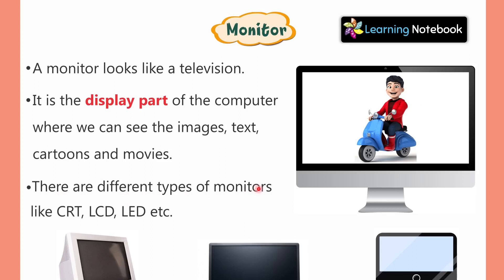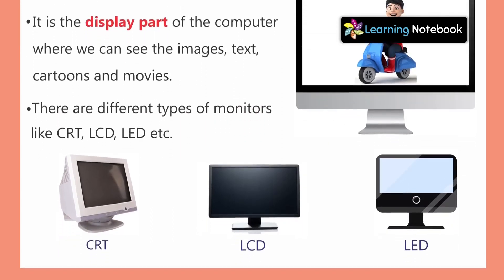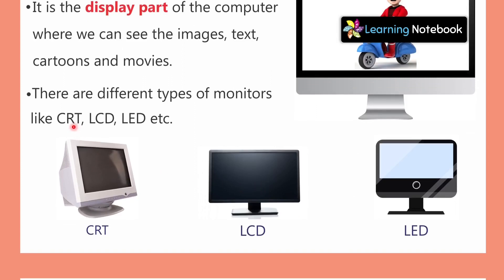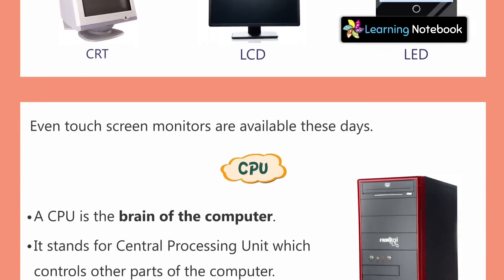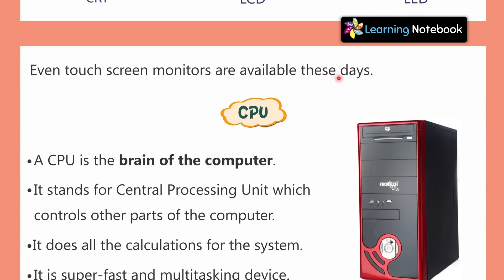There are different types of monitors. There is the CRT monitor, which was used earlier but is not common now. Then there is the LCD monitor and the LED monitor. Even touch screen monitors are available these days — just like the touch screens on our phones where we use our fingers, monitors now also come in touch screen versions. So that was about monitors, the first part of the computer. Next is the CPU.